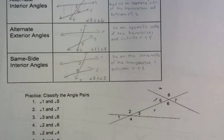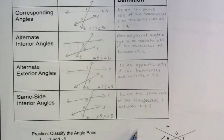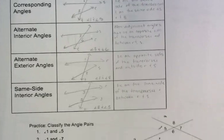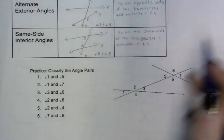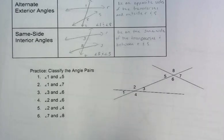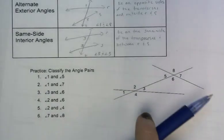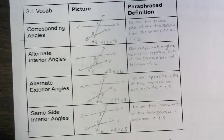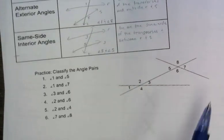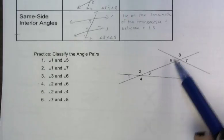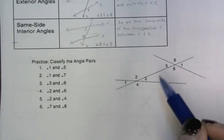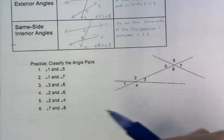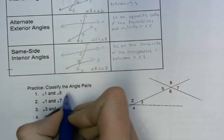Now we'll look at some angle pairs and decide which of these four types they are. Angles 1 and 5 are on the same side of the transversal, so the options are same side interior or corresponding. Well, 1 and 5 are not both interior — they're both on the left side or below the lines. So these are actually corresponding angles.